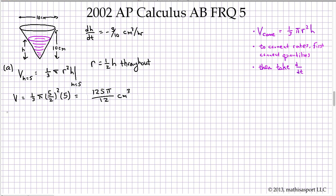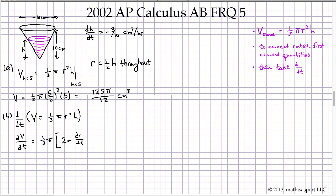Now the bulk of the problem is Part B, where they want to know the rate of change of the volume at a particular moment in time. We start with the volume formula: V equals one-third pi r squared h, and take the derivative with respect to time of both sides. Using the product rule followed by the chain rule, dV/dt equals one-third pi times the quantity 2r(dr/dt)(h) plus r squared(dh/dt).